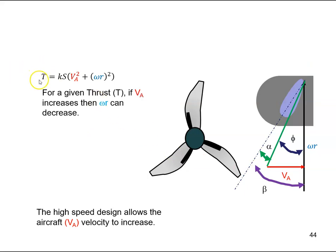But if I have a given thrust value, so whatever the thrust value was, if I have now increased v_a, to keep this constant, if I have increased this, I can decrease omega r. And if I decrease omega r, then I decrease the centrifugal force acting on the propeller blades.